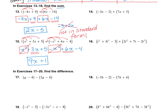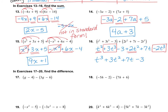I'd like you to do numbers 14 and 16 on your own. For number 14, I got 4a plus 3. For number 16, making sure it's in standard form: t to the power of 3, plus 3t squared, plus 7t, minus 3. Please double check that you have it written in the correct order.